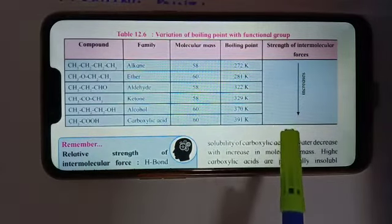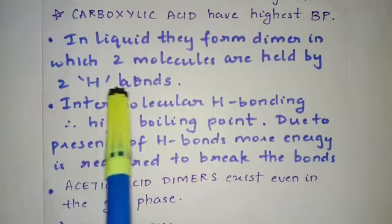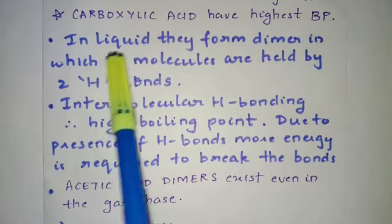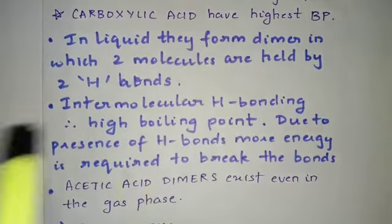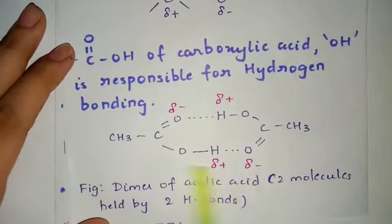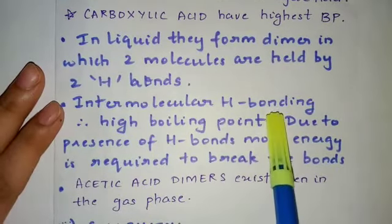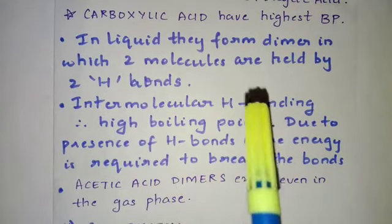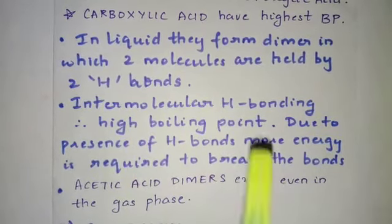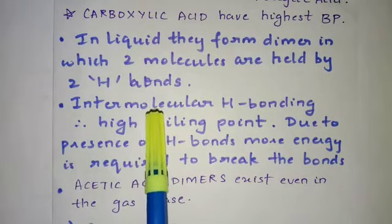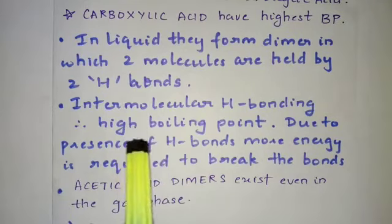As the strength of intermolecular forces increases, obviously the boiling point will also increase. Regarding the boiling point of carboxylic acid: in liquid they form dimers in which two molecules are held by two hydrogen bonds — this is the dimer structure we just discussed for acetic acid. Because of intermolecular hydrogen bonding, it has a high boiling point. The point is to understand why carboxylic acid has the highest boiling point — it forms a dimer through intermolecular hydrogen bonding.